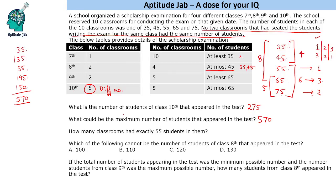Suppose they had asked for the minimum instead. In that case we consider 3 rooms with 35 students and 1 room with 45 students. That gives 105 instead of 170, which is 20 less, so the minimum total would be 550.